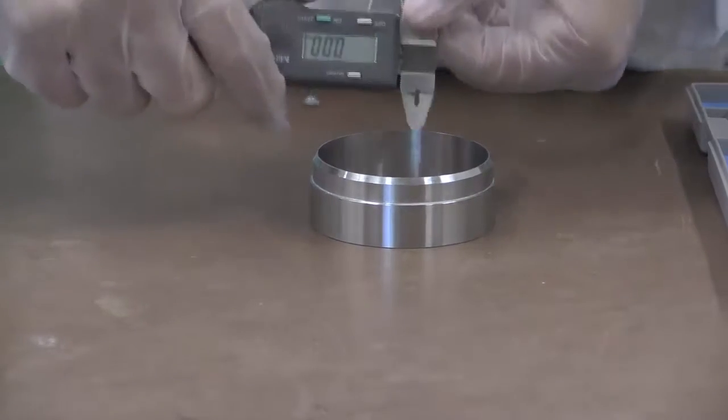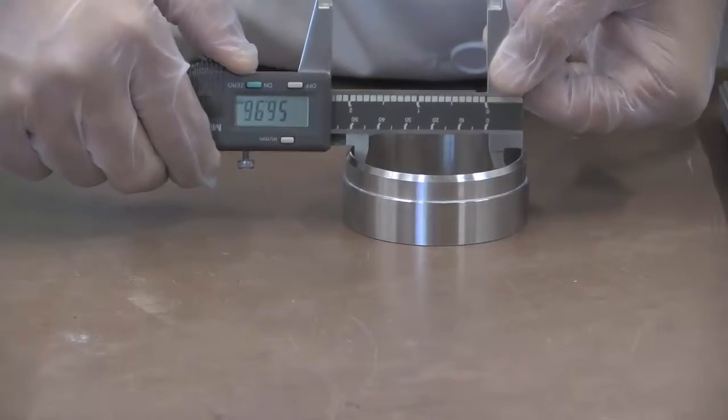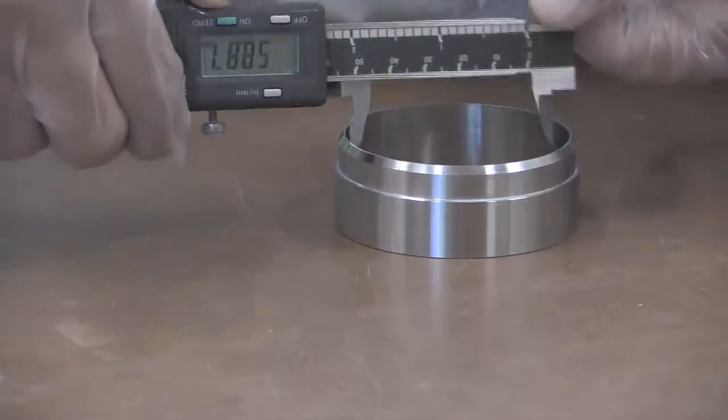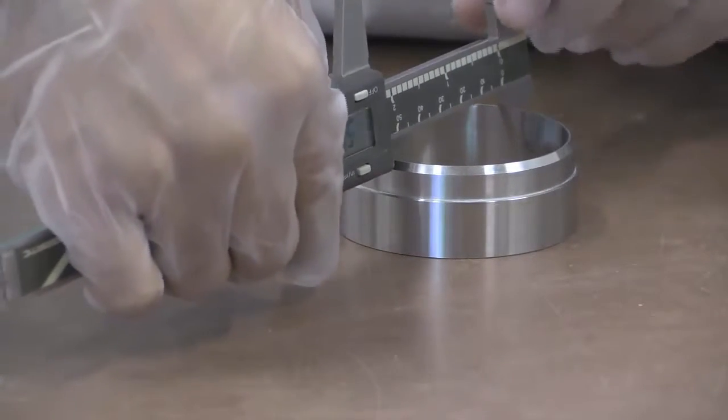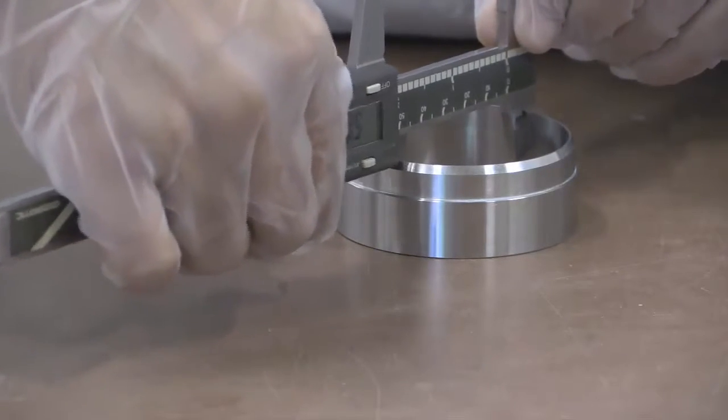Measure and record the internal diameter of the odometer ring by using a vernier caliper. Take at least three measurements for the diameter at three different orientations. These measurements will be averaged to determine the internal diameter of the odometer ring.